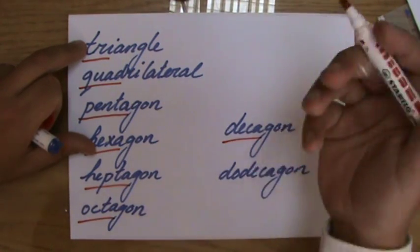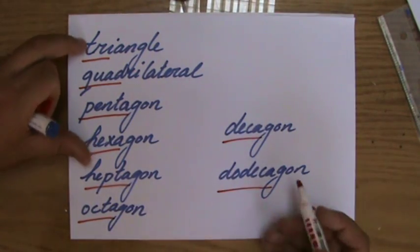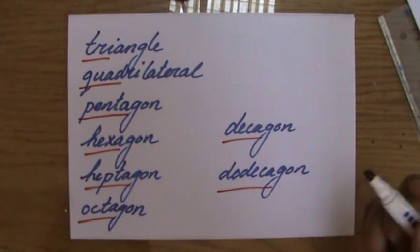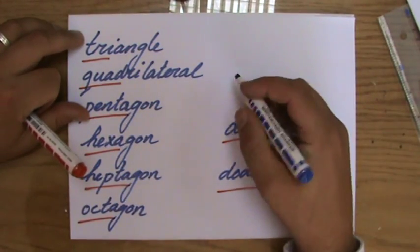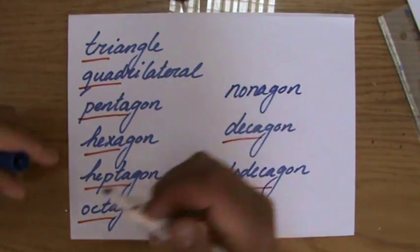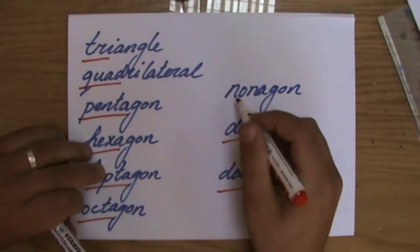A decagon, ten-sided. And a dodecagon is a twelve-sided figure. And I think I forgot one. I'm not sure why. But you should also know a nonagon, which is a nine-sided figure. Good. So polygons.